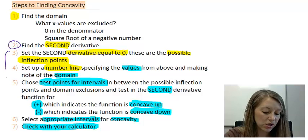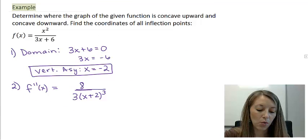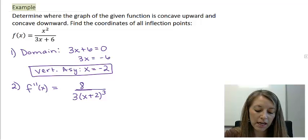Let's move on and finish up the rest of these steps. We found the domain, we found that we had a vertical asymptote at negative two, and we found our second derivative was 8/(3(x+2)³).